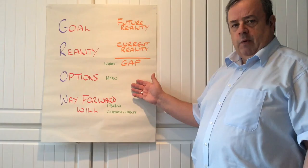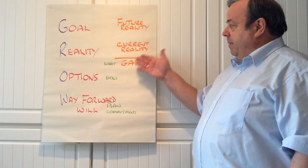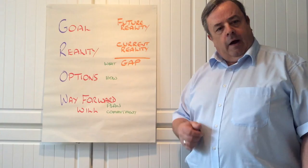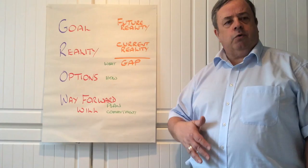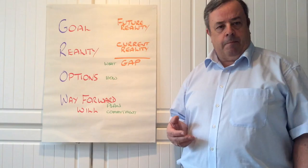Once we have decided what it is that we need to do that will resolve the gap, then we need to be thinking about the way forward. What is the plan — the route map as it were — from the current reality to the future reality? And along the way we want to check this thing called will. What is the individual's commitment to making it happen? We'll look at their competence to make it happen and then we need their commitment to make it happen.